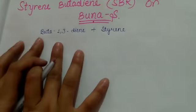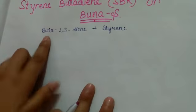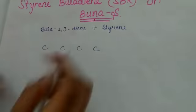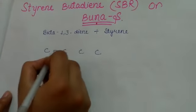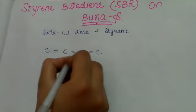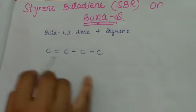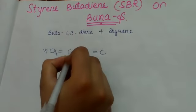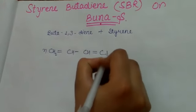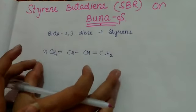We have buta-1,3-diene plus styrene to make Buna-S rubber. Buta-1,3-diene plus styrene. Like natural rubber, we have first and third carbon with double bonds. These molecules are CH2, CH, CH, CH, and CH2. This gives us buta-1,3-diene.